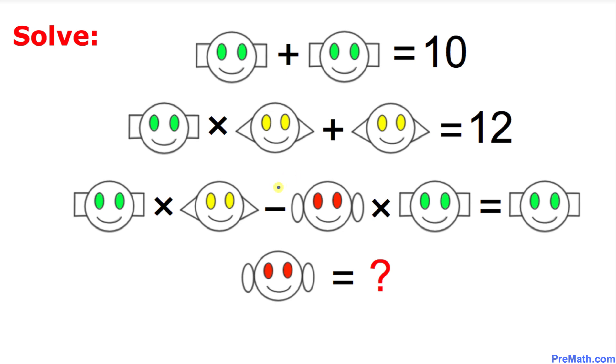Welcome to PreMath. In this video tutorial, we are going to solve this emoji puzzle. As you can see, we have three equations with three types of happy faces: one is green, the other one is yellow, and the last one is red.